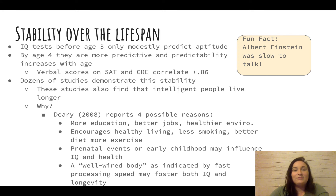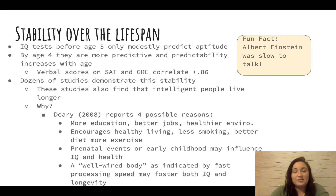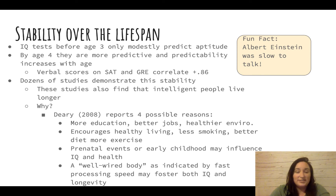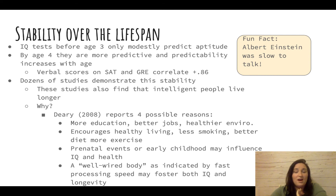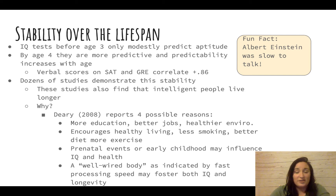Looking over the whole lifespan, testing before age three isn't a reliable predictor of future abilities, but by age four tests tend to be better predictors. The older we are, the more predictive the scores are of our abilities. Dozens of studies have demonstrated that intelligent people tend to live longer.